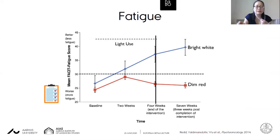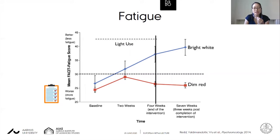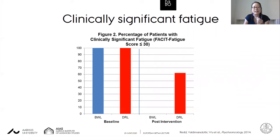The y-axis represents fatigue levels where a higher score indicates less fatigue, and the x-axis represents time. Between baseline and four weeks — the end of light box use — those who used the bright white light box saw their fatigue levels drop to healthy levels, and this continued even after they stopped using the light box.